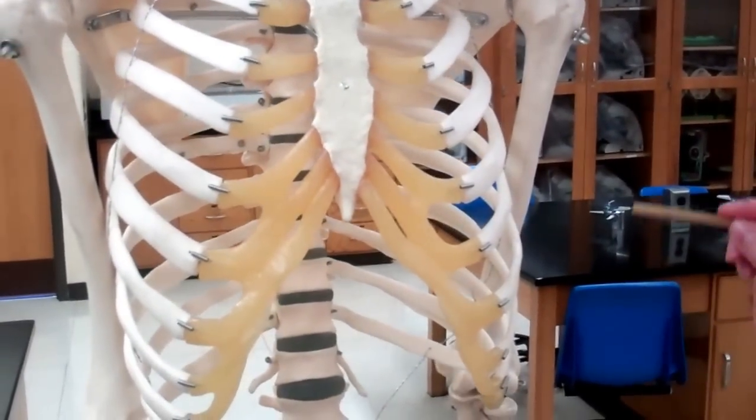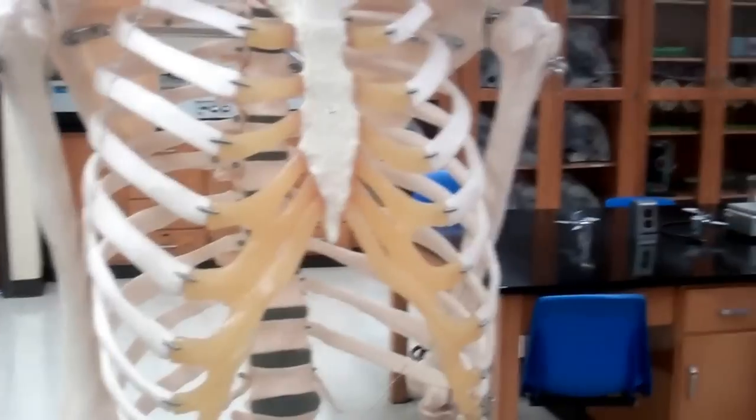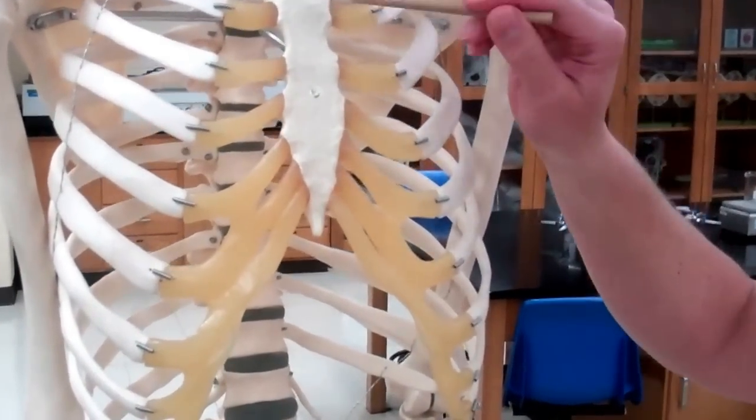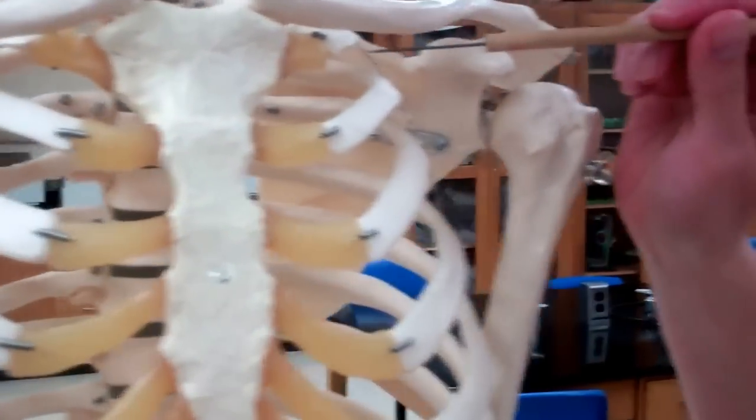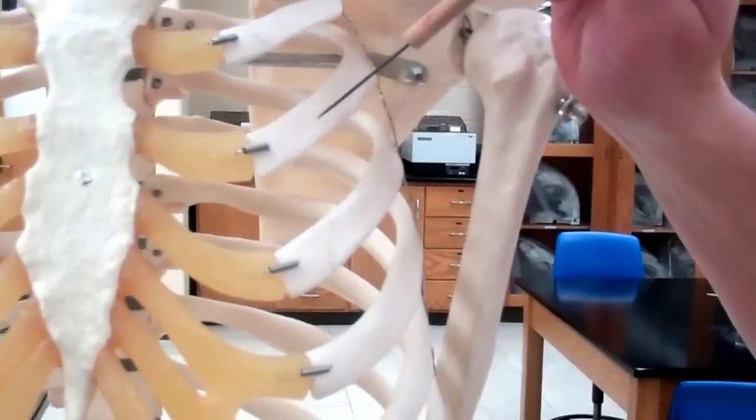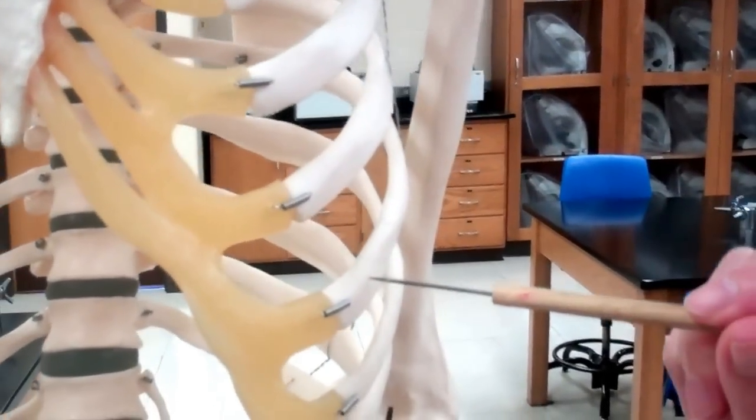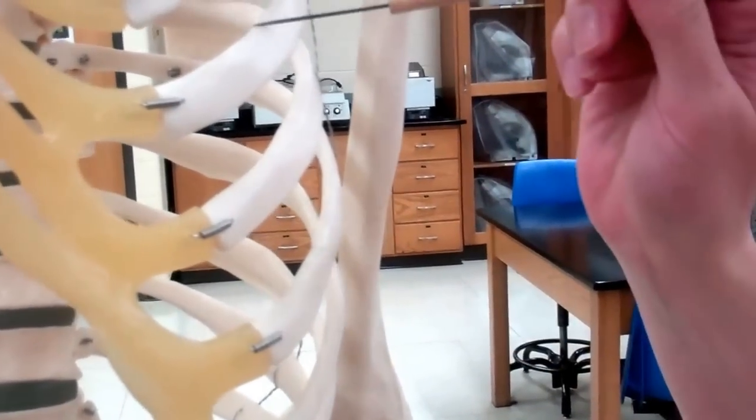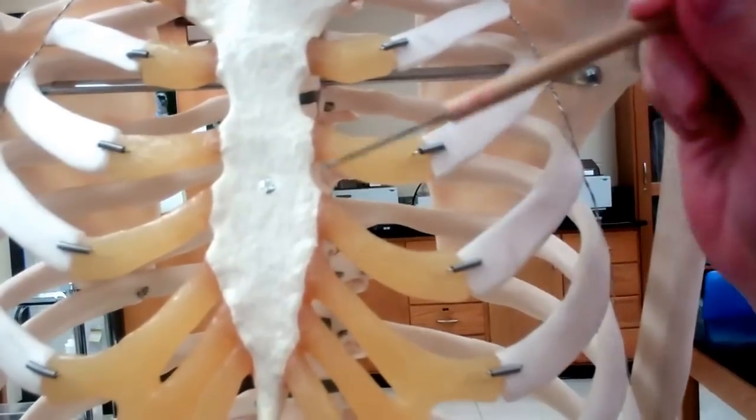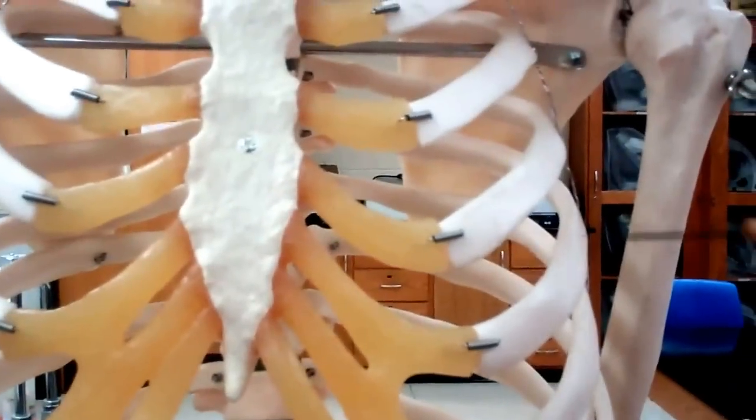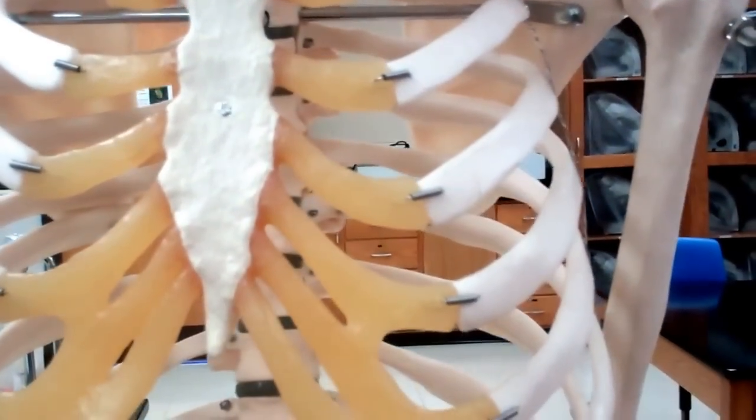If we spin this guy around, we can look at the thoracic cage. This is still going to be part of our axial skeleton, and it's going to consist of each rib and the sternum. The ribs are divided into three categories. The first seven are going to be our true ribs. Notice each one of these is going to touch the cartilage that leads straight to the sternum - it's a direct connection. This cartilage is costal cartilage, and it's hyaline cartilage.